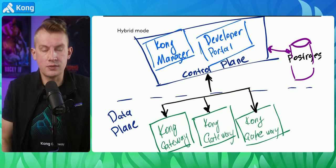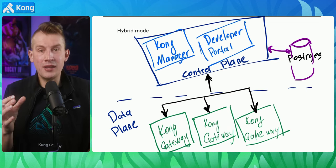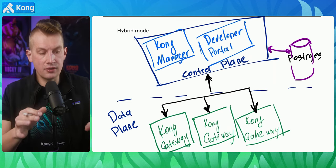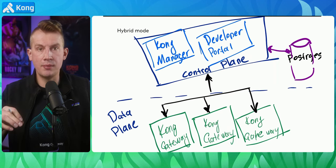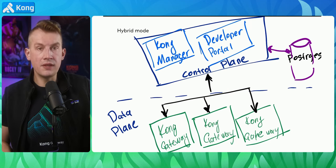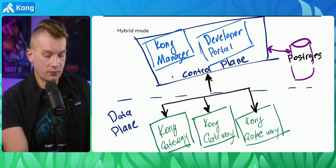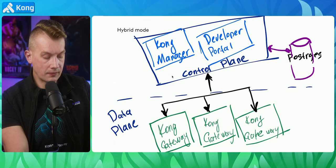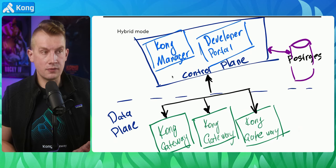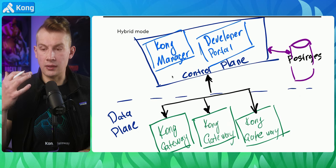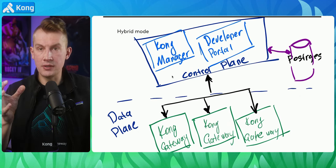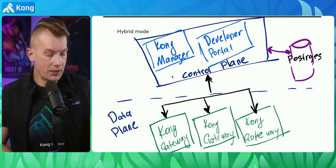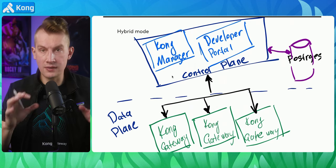Kong Manager, developer portal — all those things will work. Someone might ask: what if I want configurations that depend on environment? Say I have testing, staging, QA, pre-production, and production environments. With hybrid mode, things become slightly easier than with the traditional approach because you no longer need to replicate a database. However, you still need to migrate configuration between environments. With declarative configuration tools like deck, you can create a config in one place, dump it, and propagate it to another environment. But with hybrid mode, you need to manage separate environments — QA needs its own control plane installation.